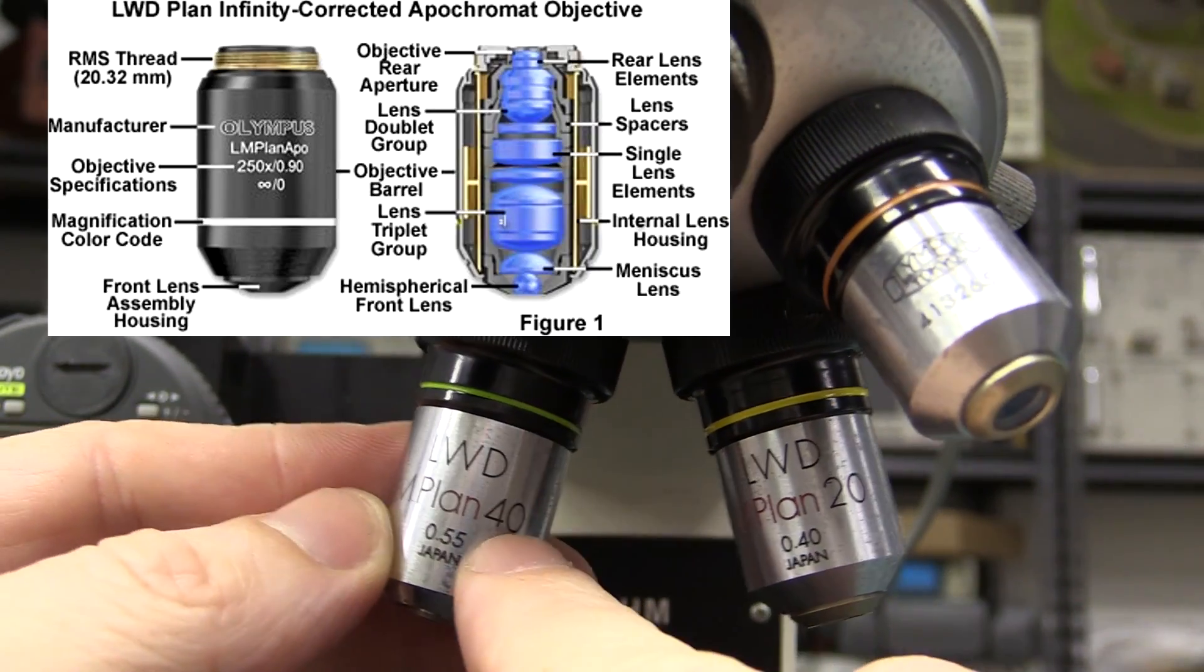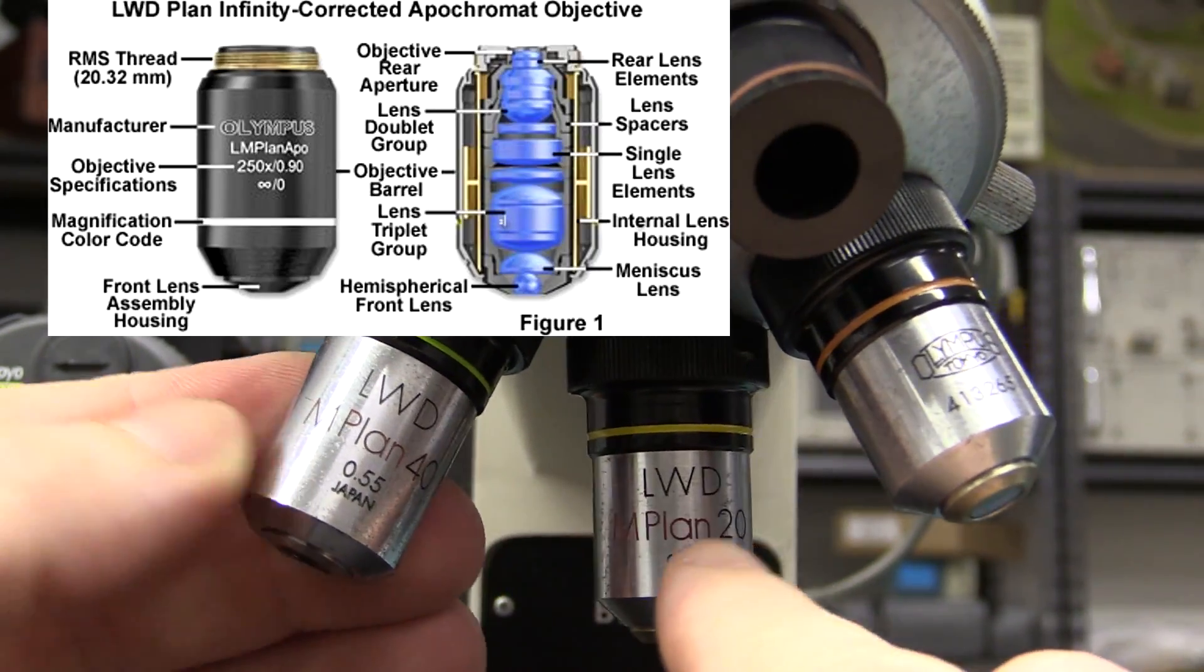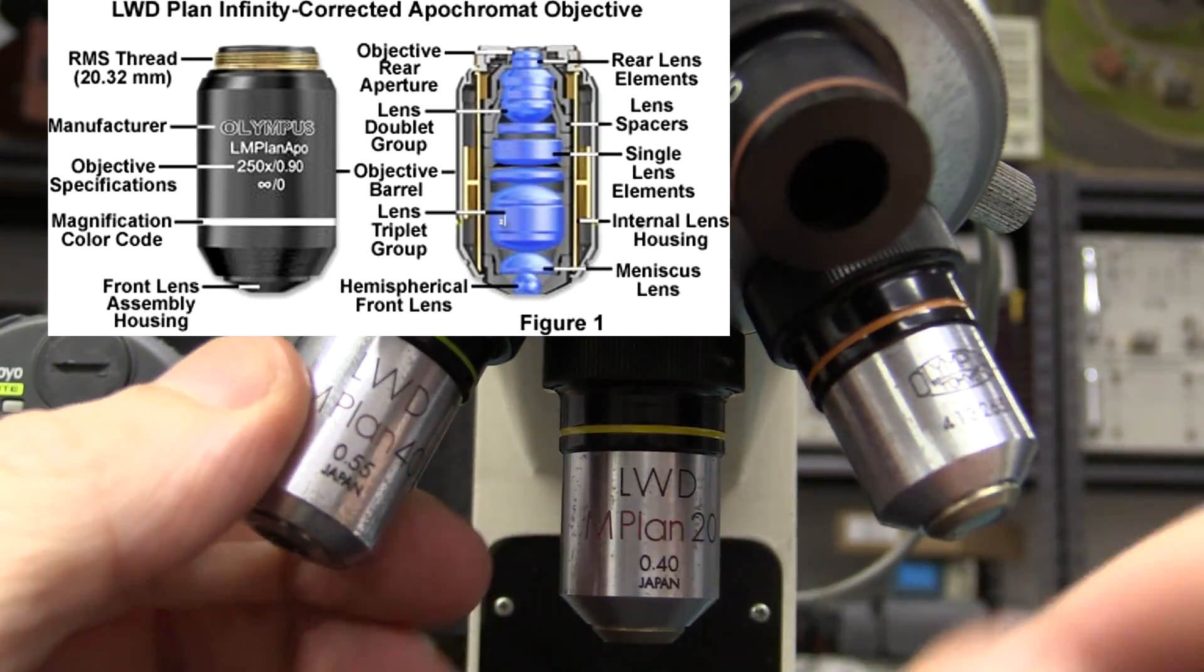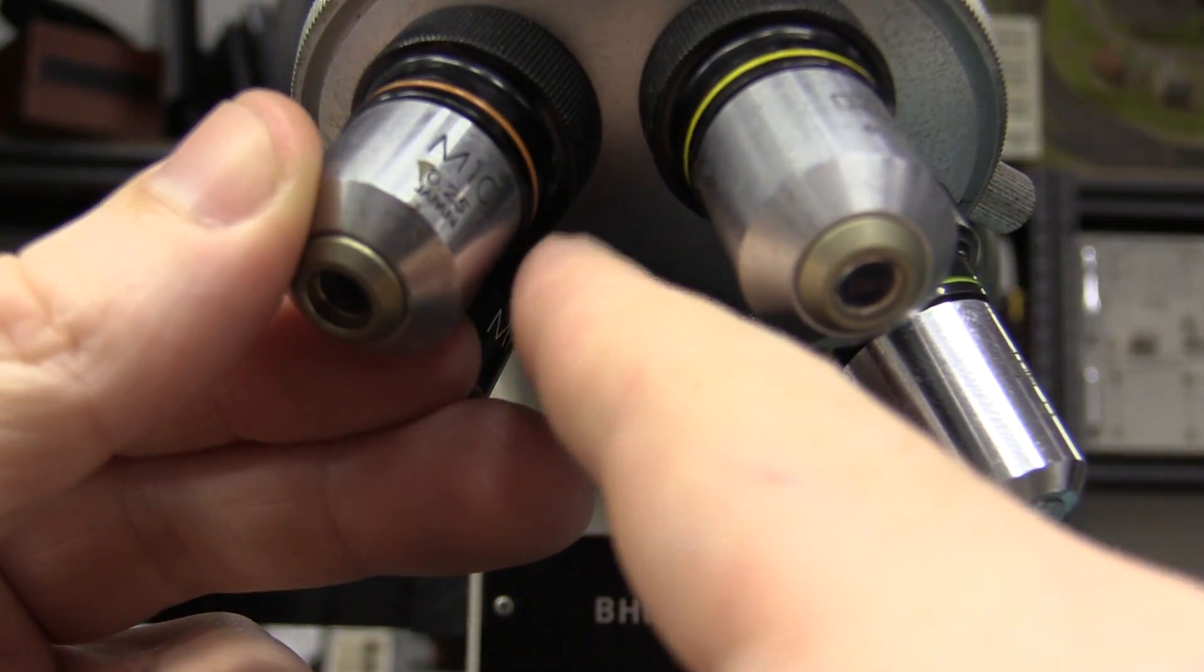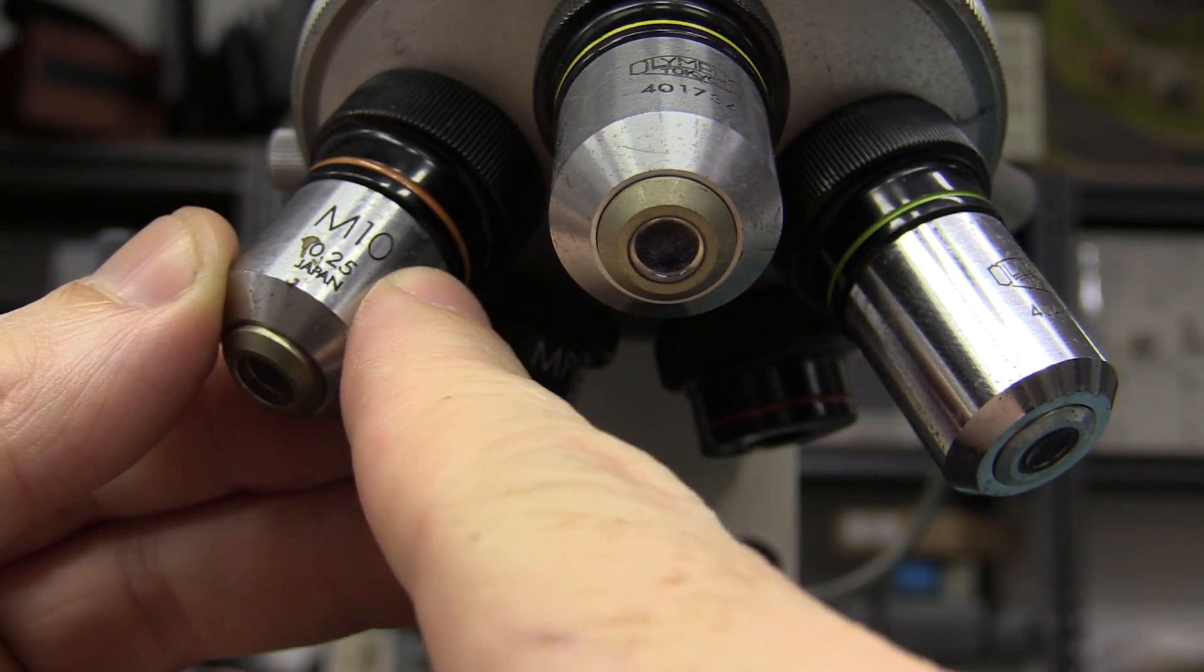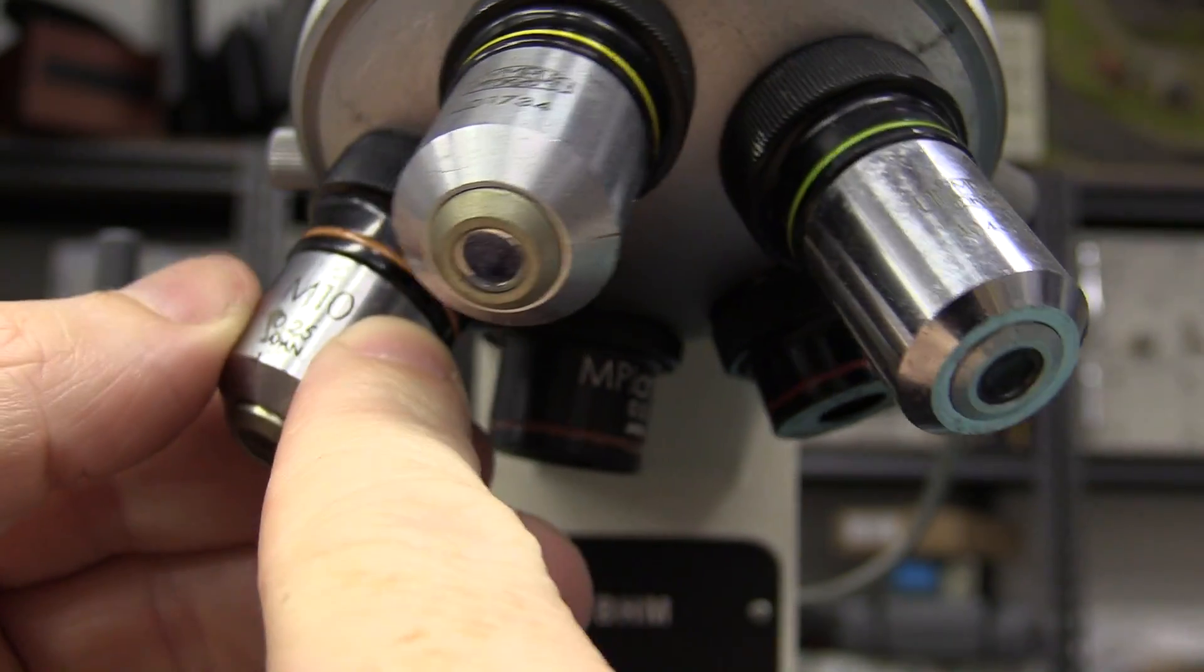What plan means is that it is basically adds no distortion over the entire field of view. And you might think that's, well, obvious, okay, but at high magnifications, it's quite an art to make optics over the entire field of view that don't distort anything. And that's what these plan objectives do.